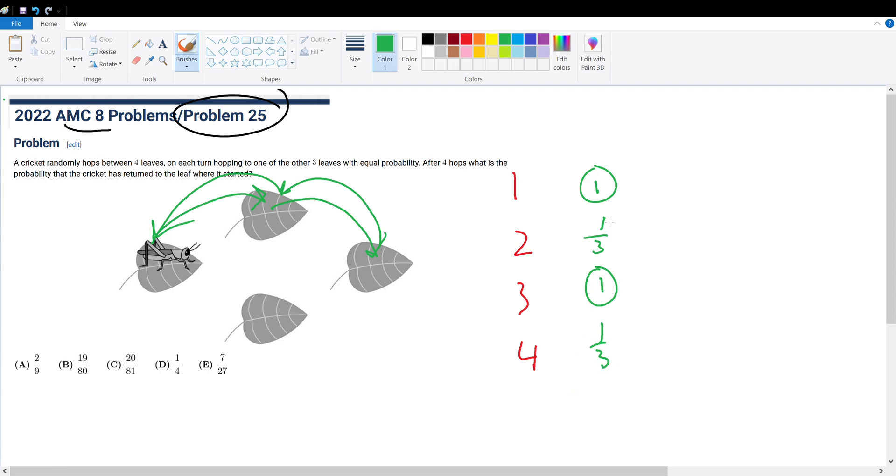So the chance of this happening, multiply all of it together, one-third. All right, so now we just basically repeat the same logic for any other path we find. And then we sum it all up, and that will be our answer.